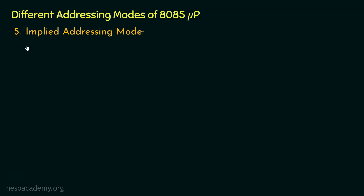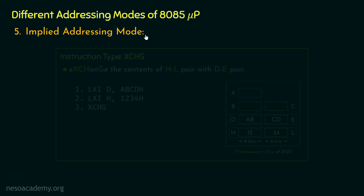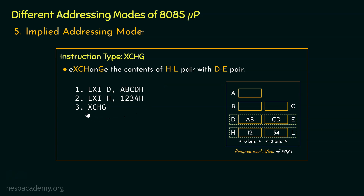Let's learn about the last type — implied addressing mode. If you remember, in the previous session we learnt about the instruction XCHG. Using this one-byte-long instruction, the contents of the DE register pair and the HL register pair can be exchanged. Notice, within the instruction itself we never mentioned anything about the HL or DE register pairs. However, seeing this instruction, the microprocessor will inherently know what is trying to be implied — that is, it will have to exchange the contents of these two register pairs. So these kinds of instructions fall under the category of implied addressing mode.